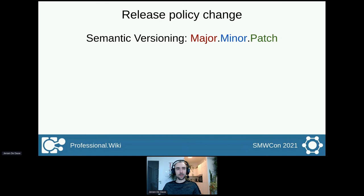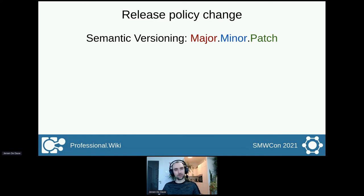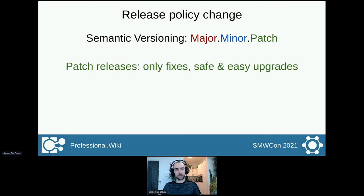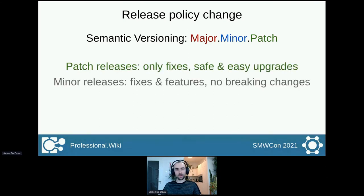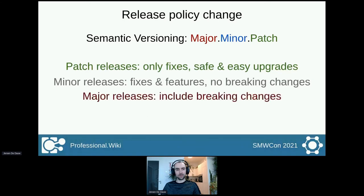I should briefly mention the release policy change that we made, which comes into effect with Semantic MediaWiki 4.0. We very appropriately follow Semantic Versioning, meaning that version numbers consist of three meaningful parts: Major, Minor, and Patch. Patch releases can only contain fixes. Minor releases can contain fixes and features. And Major releases can include everything, including breaking changes.